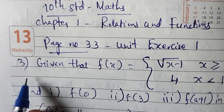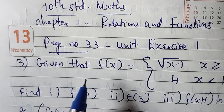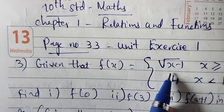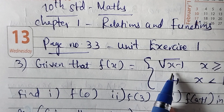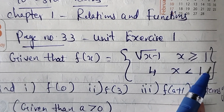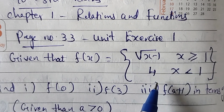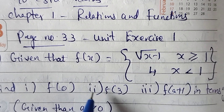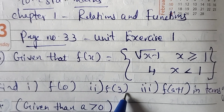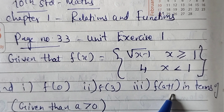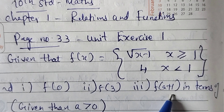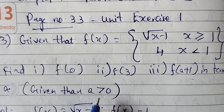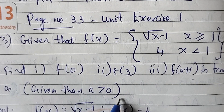Unit exercise 1, third sum. Given that f of x equals square root of x minus 1 when x is greater than or equal to 1, and f of x equals 4 when x is less than 1. Find f of 0, f of 3, and f of a plus 1 in terms of a, given that a is greater than 0.